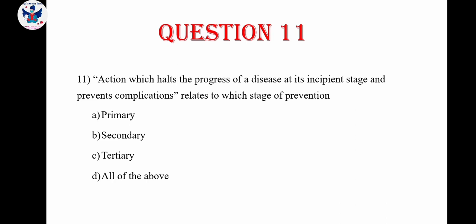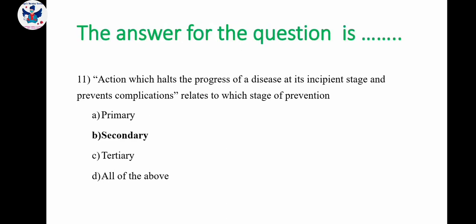Question number 11. Action which halts the progress of a disease at its incipient stage and prevents complications relates to which stage of prevention? A. Primary, B. Secondary, C. Tertiary, D. All the above. Primary prevention means taking measures before the disease occurs; secondary means early identification and treatment; tertiary means rehabilitation therapy. Here we are preventing complications, so the answer is option B, Secondary prevention.